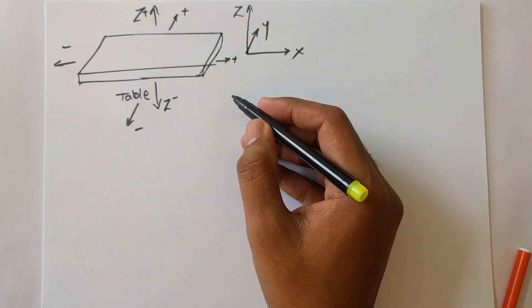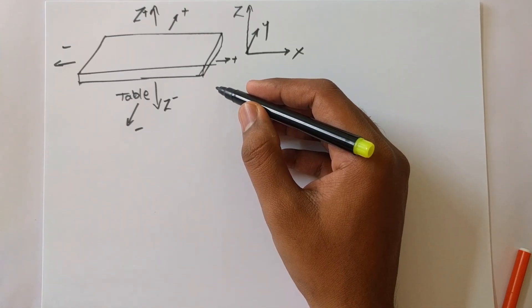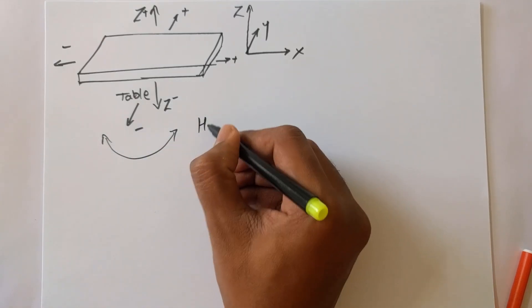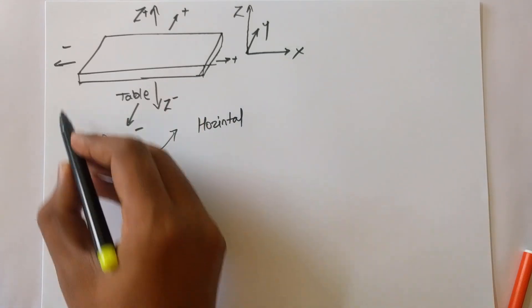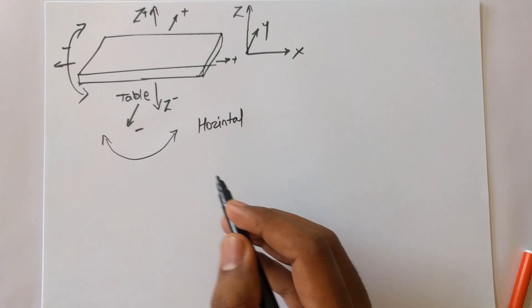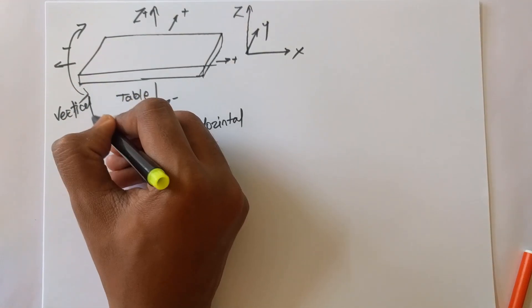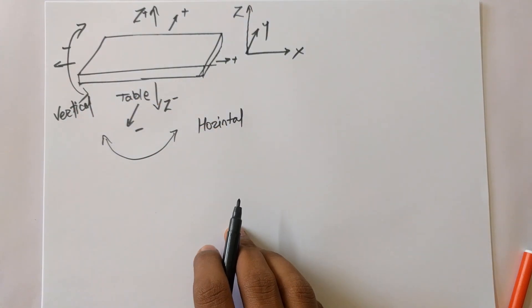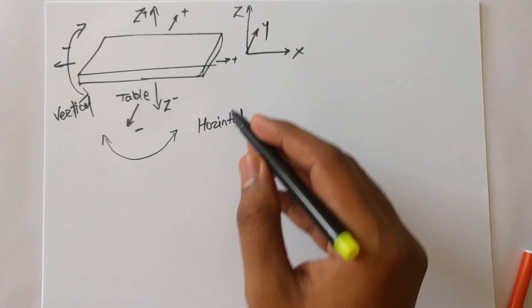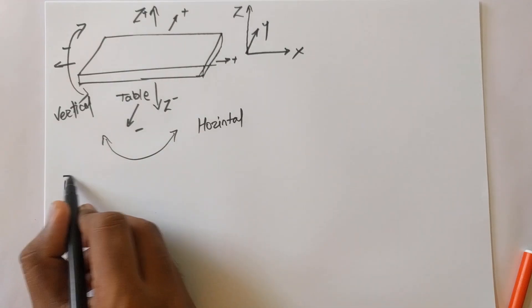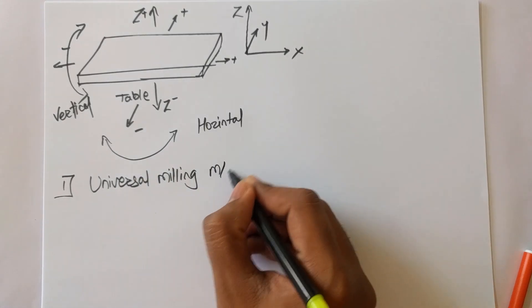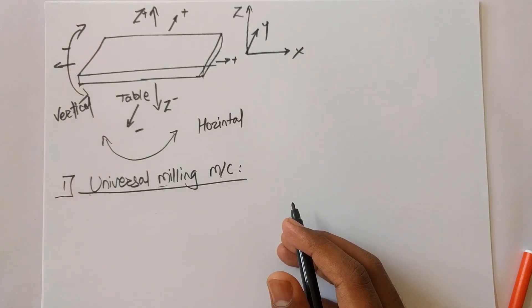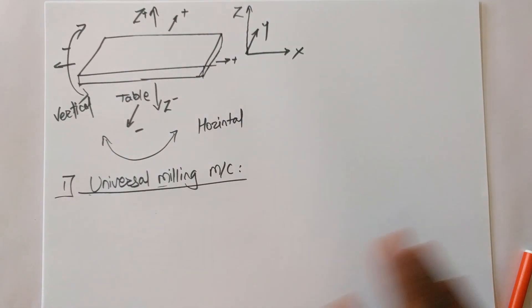There will also be some rotational motion of the table — horizontal rotation in both directions, and vertical rotation as well. Now, the first type based on these motions is the universal milling machine. In the universal milling machine, the machine has a table fitted with all the motions and a dividing head, with the ability to perform any type of milling operation.